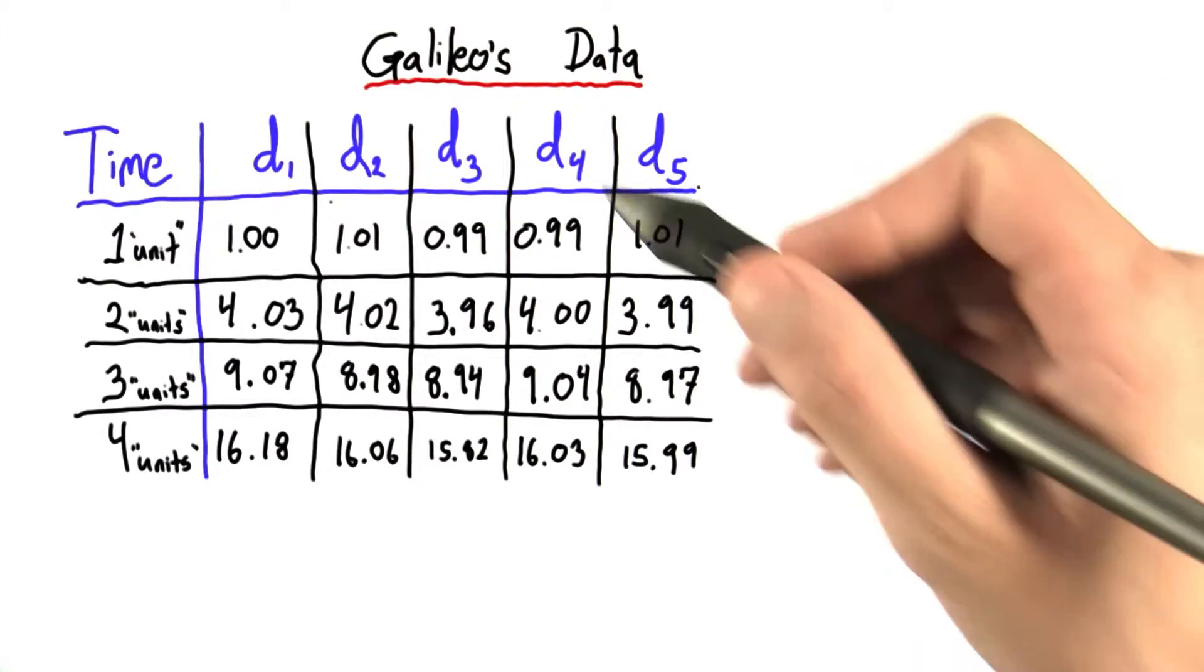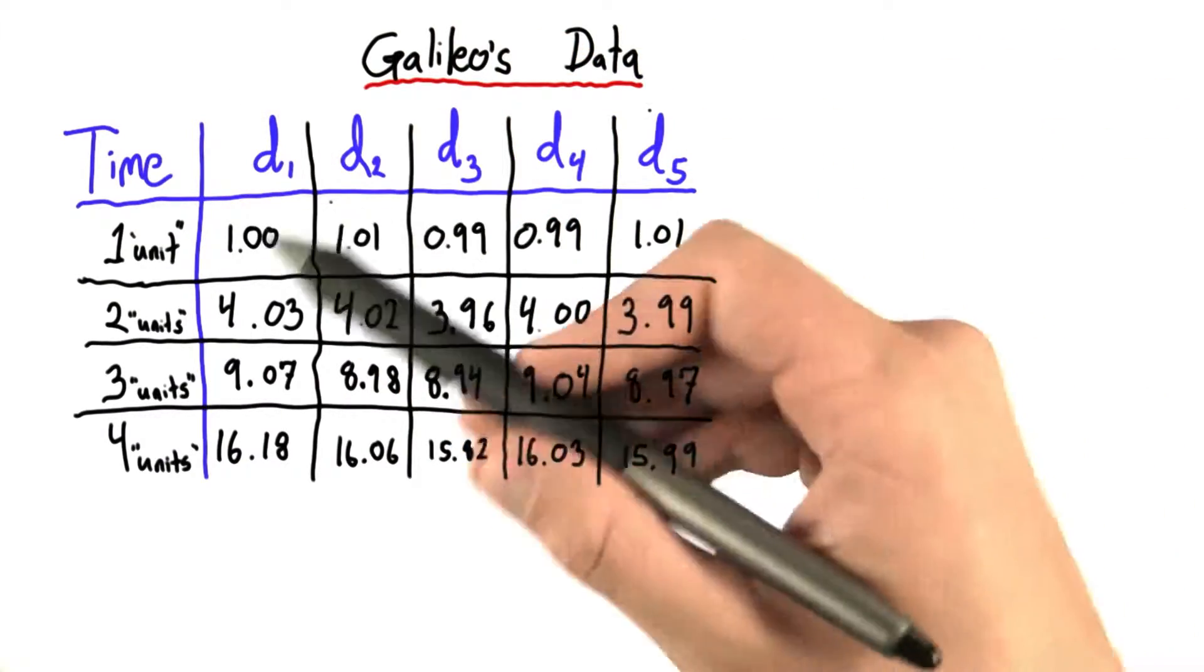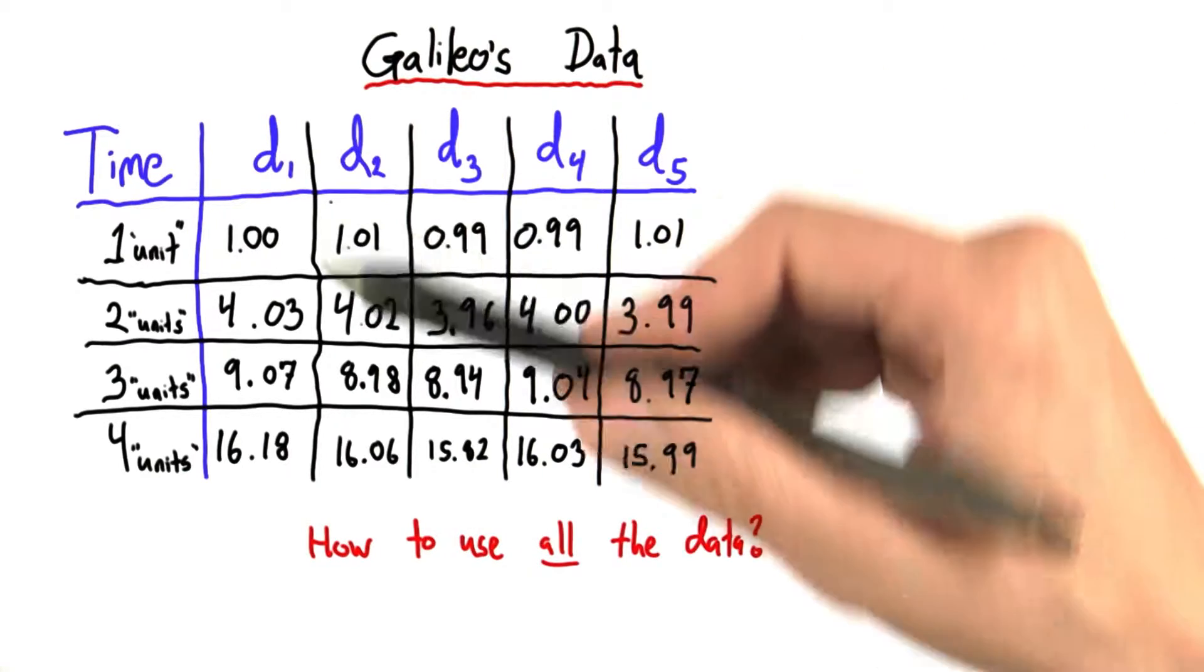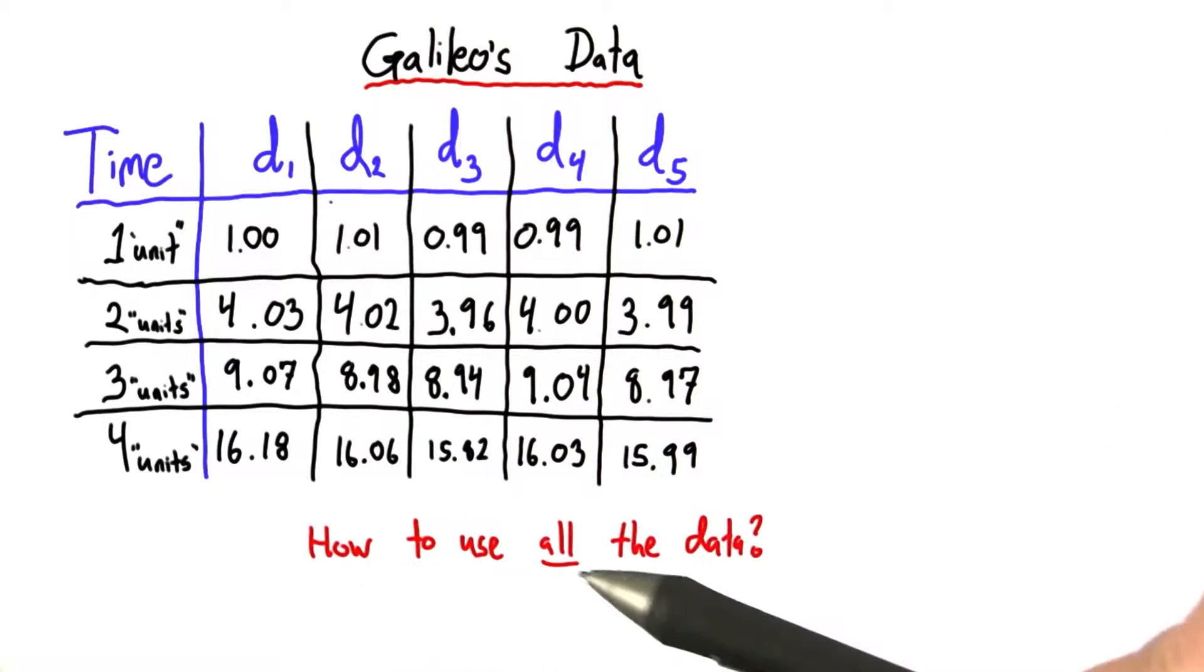But how does he take advantage of the fact that he's collected each piece of data multiple times? Presumably he wants to find patterns in this data, but how does he use all of it? He's collected it, he should use it all.